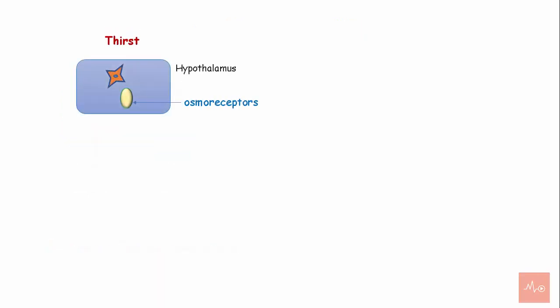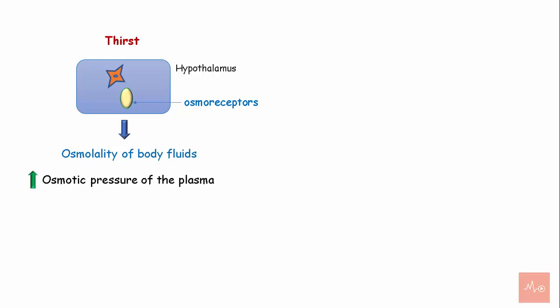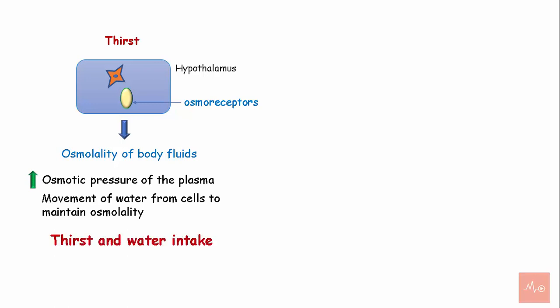Regarding thirst, the anterior hypothalamus contains osmoreceptors. These receptors have the ability to sense the osmolality of the body fluids. Increased osmotic pressure of the plasma leads to movement of water from the cells to maintain osmolality, causing thirst and increased water intake.